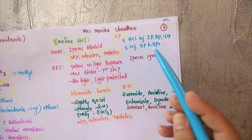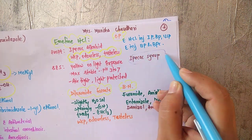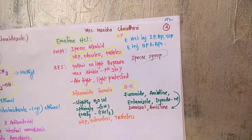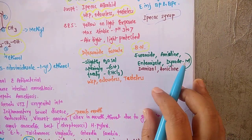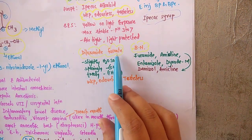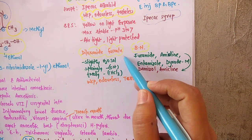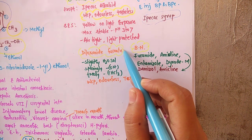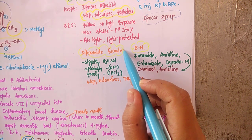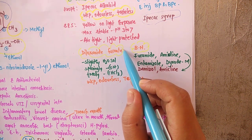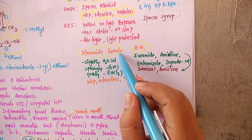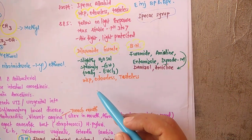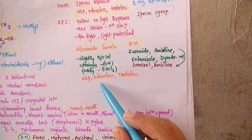Now diloxanide furoate. This is also very important. It is an important luminal agent. It is extensively used. It is the drug of choice in the treatment of amoebiasis.